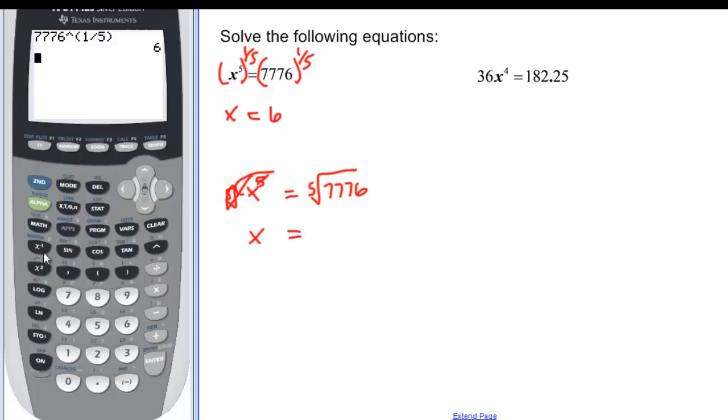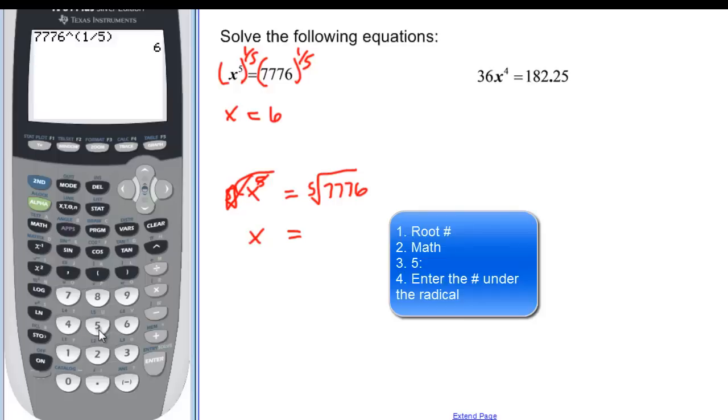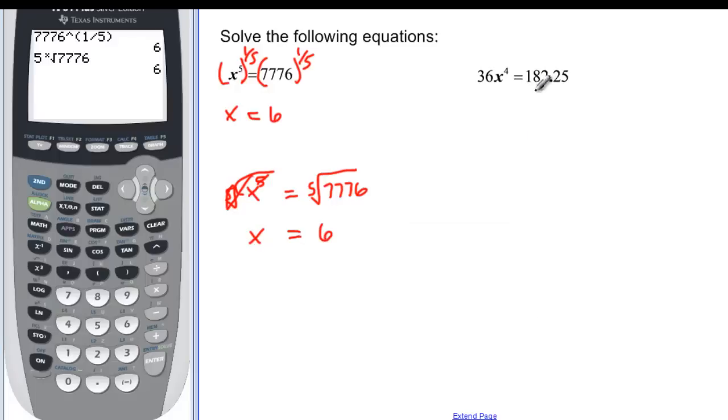So that's just x. And then in our calculator, if you remember how to do these, you first have to put the root number in. And then you go to math, and you choose option 5 because that's the x root. We've already put the x part in. And then we can put our 7,776 in there, and we still get 6.